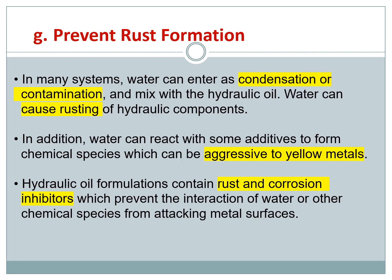The next one is preventing rust formation. In many systems, water can enter as condensation or contamination and mix with the hydraulic oil. Water droplets can cause rusting of the hydraulic components, especially those related to iron. Water can also react with some additives and chemical-based substances and can be aggressive to yellow metals such as brass. Hydraulic oil formulation must contain rust and corrosion inhibitors, and you need to have proper lubrication in order to avoid this.